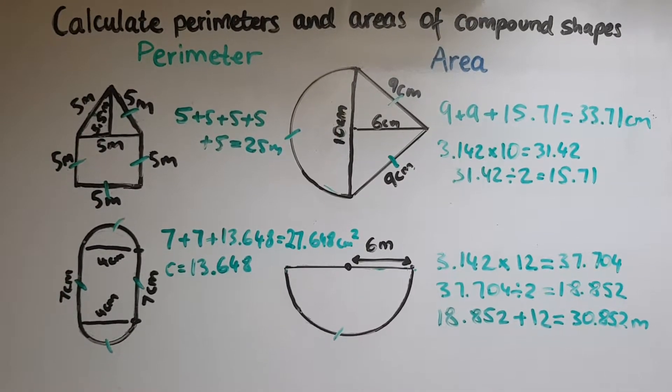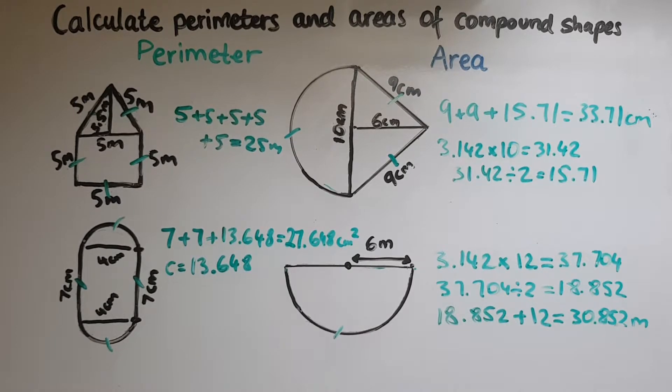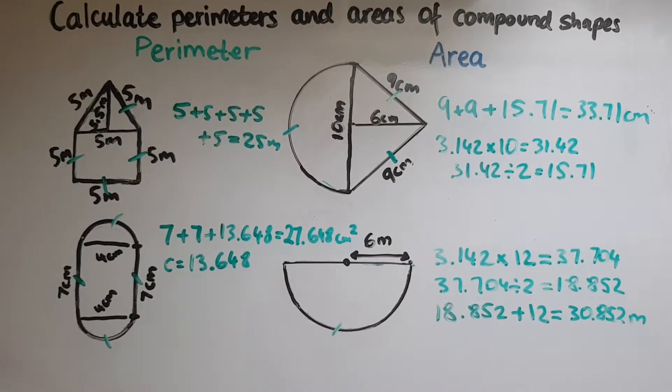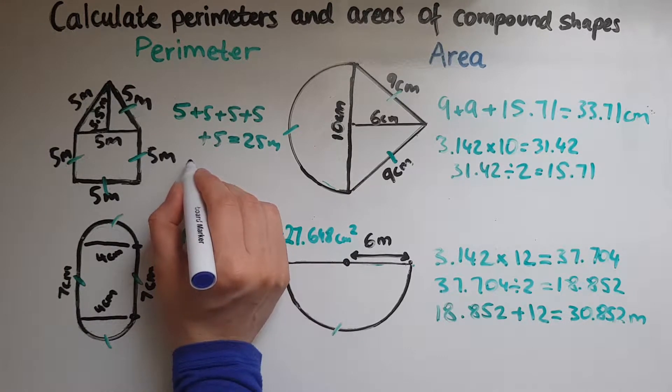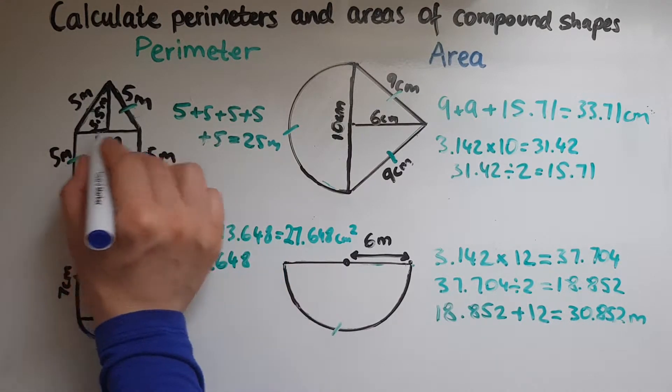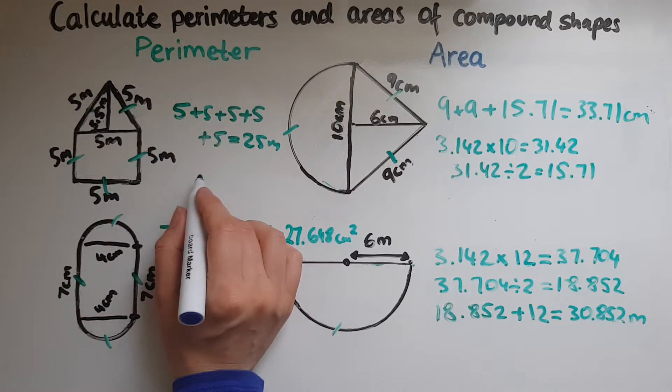We'll now look at the area of this shape. Starting with the first one, we'll add together the area of the square and the area of the triangle. The area of the triangle is worked out by base times height divided by two, or length times width divided by two.